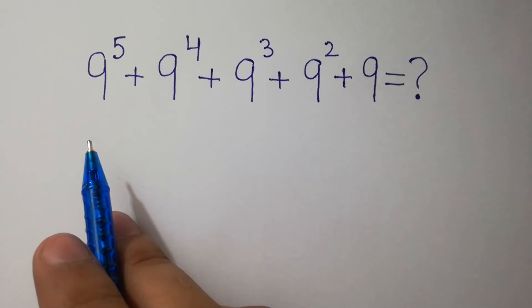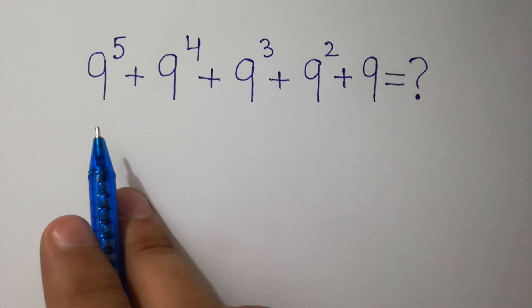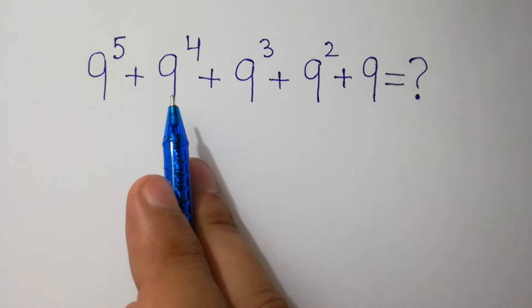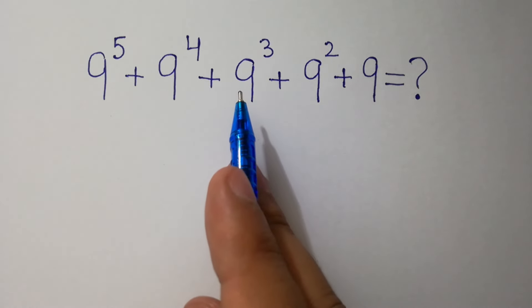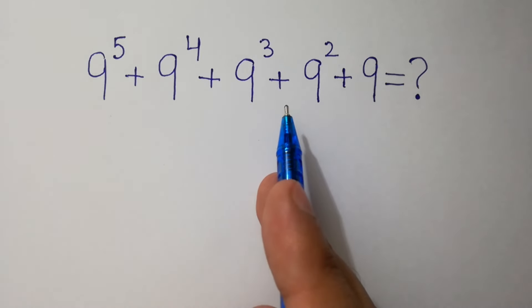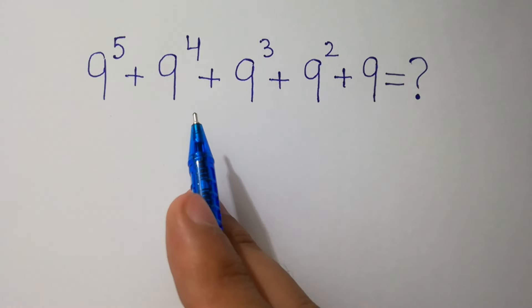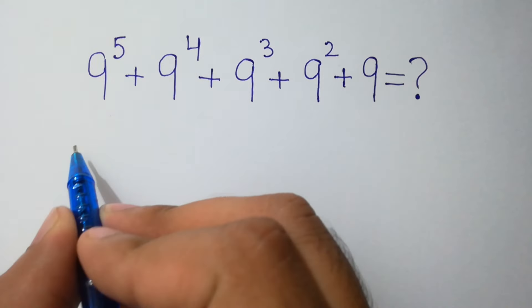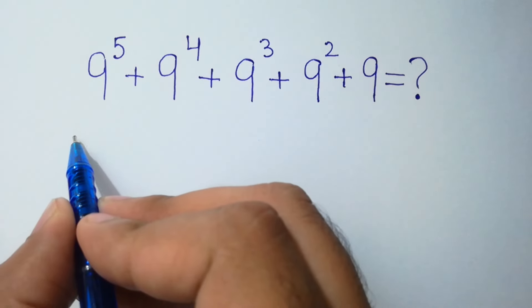Hello friends, can you solve this without using any calculator? 9 to the power 5 plus 9 to the power 4 plus 9 cube plus 9 square plus 9 equals? Let's solve it.